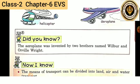Now, do you know children, the aeroplane was invented by two brothers named Wilbur and Orville Wright. These are called the Wright Brothers also.